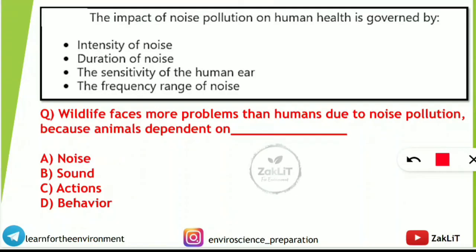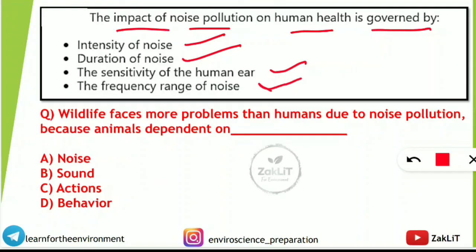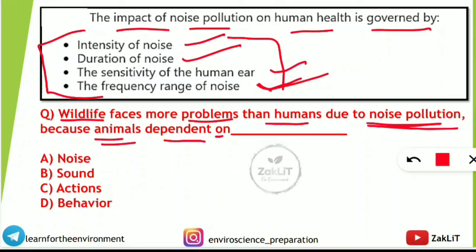The impact of noise pollution on human health is governed by: intensity of the noise, duration of the noise, sensitivity of the human ear, and frequency range of the noise. Wildlife faces more problems than humans due to noise pollution because animals are dependent on sounds for their behavior and communication. So the correct answer is option B — sounds.